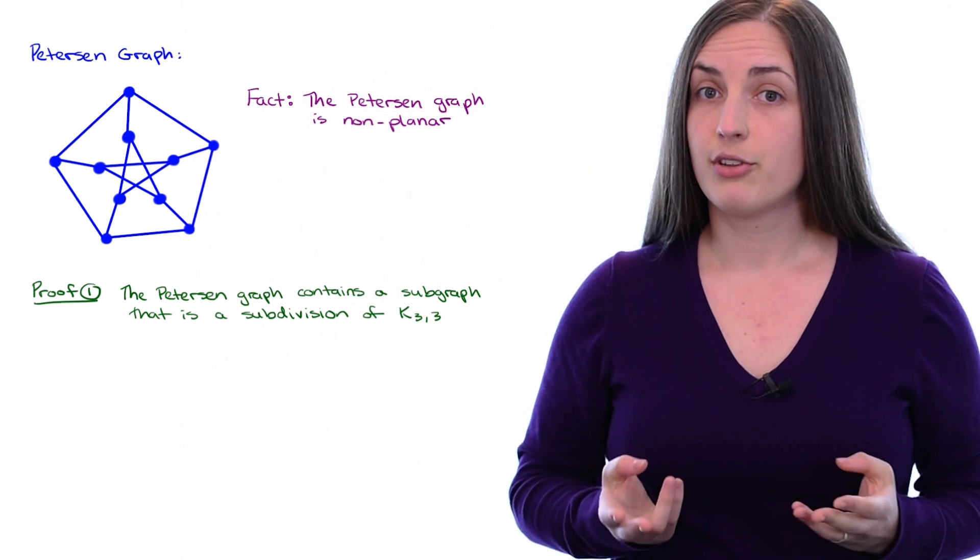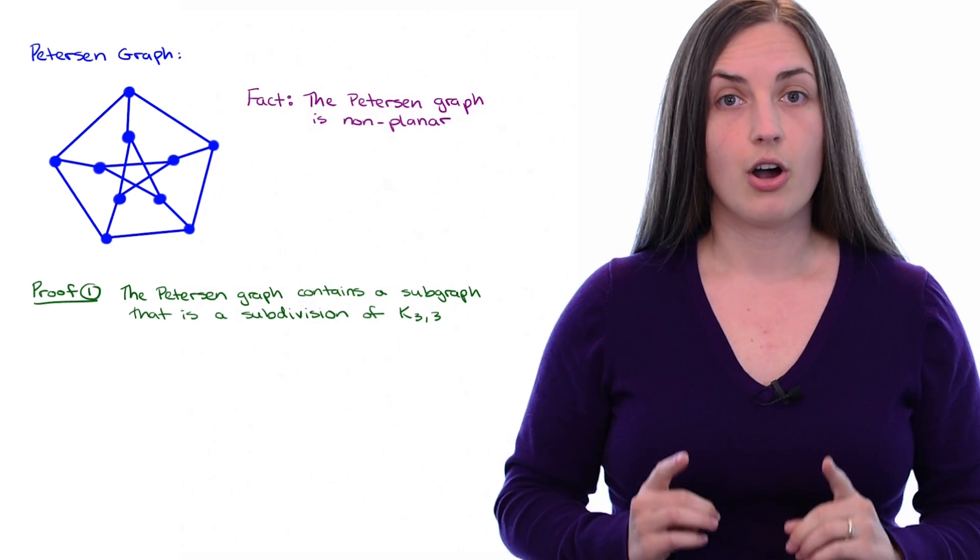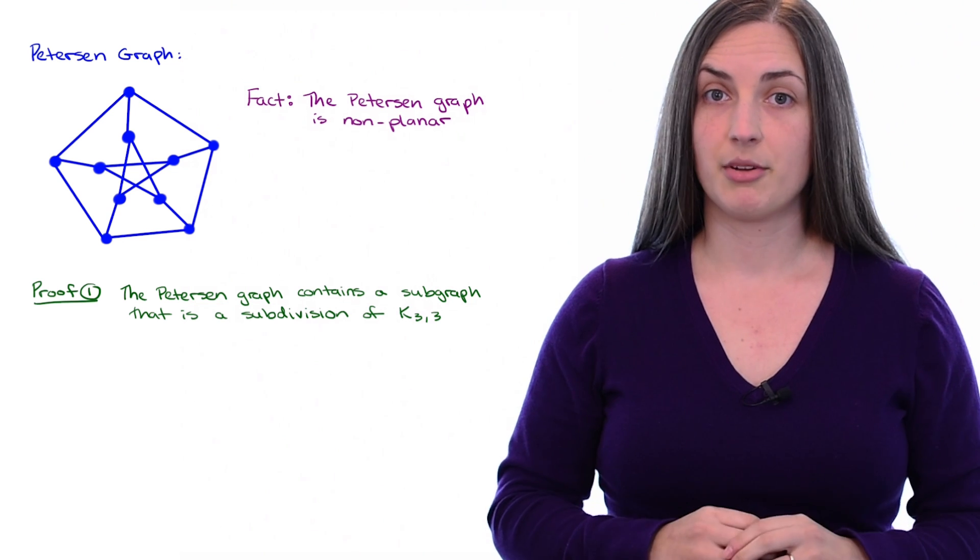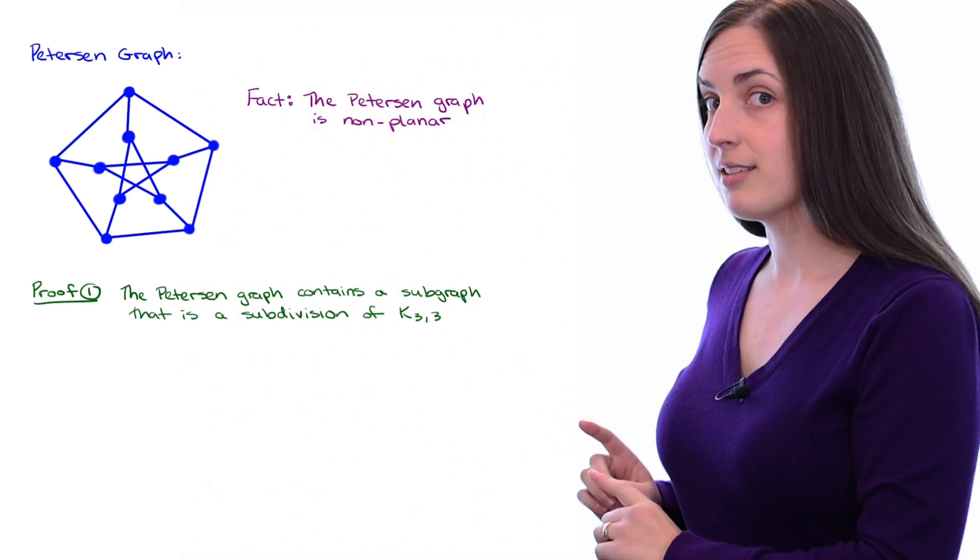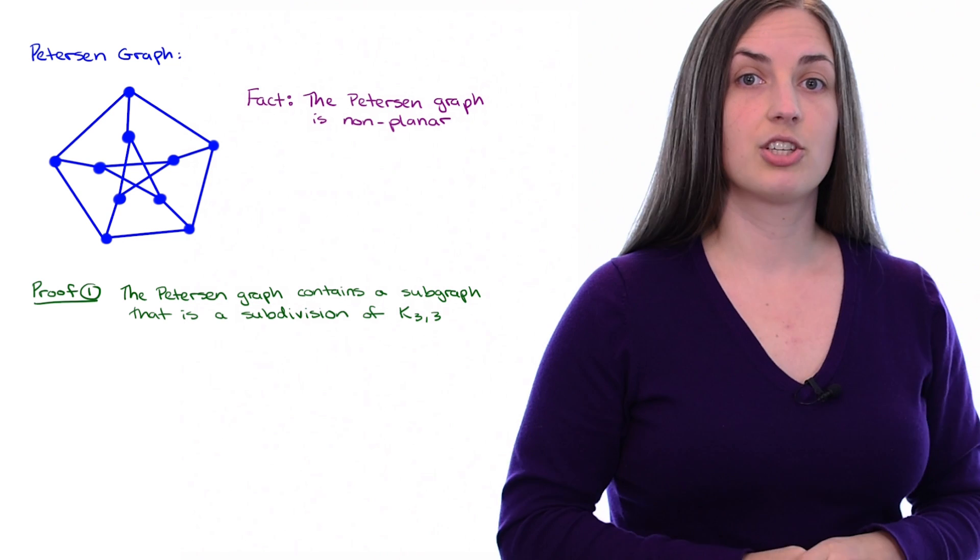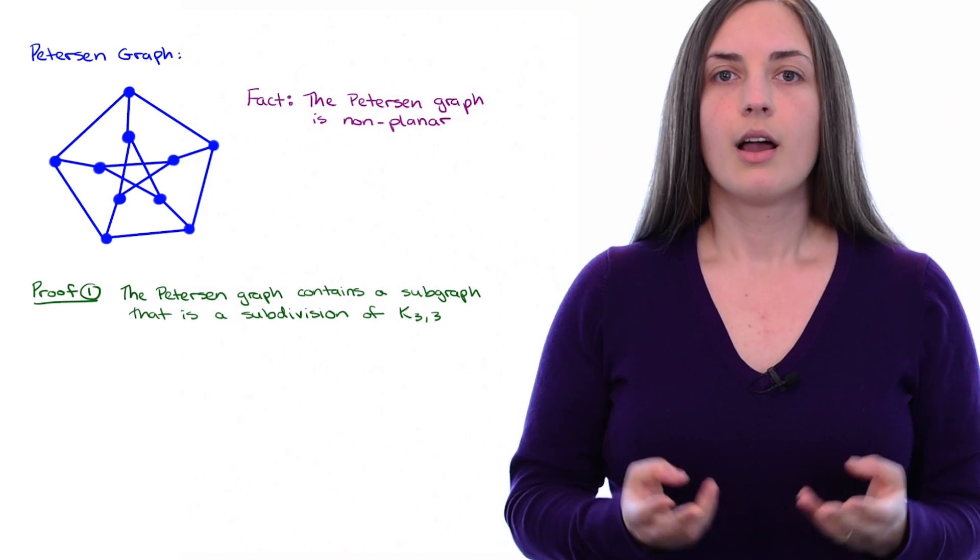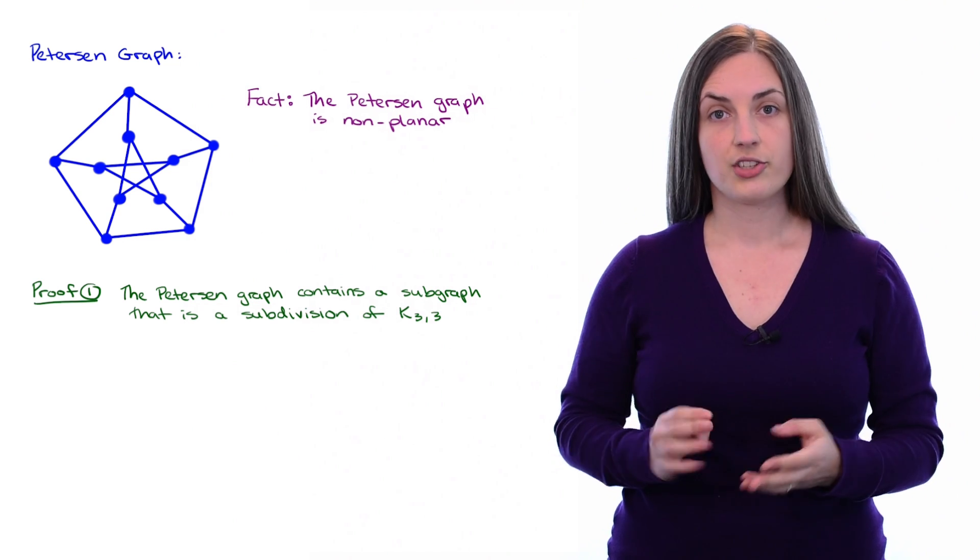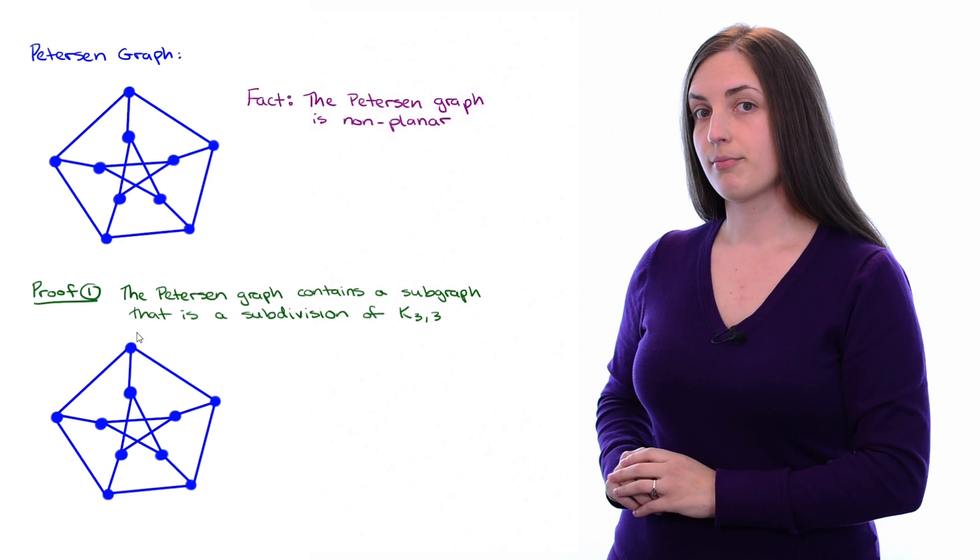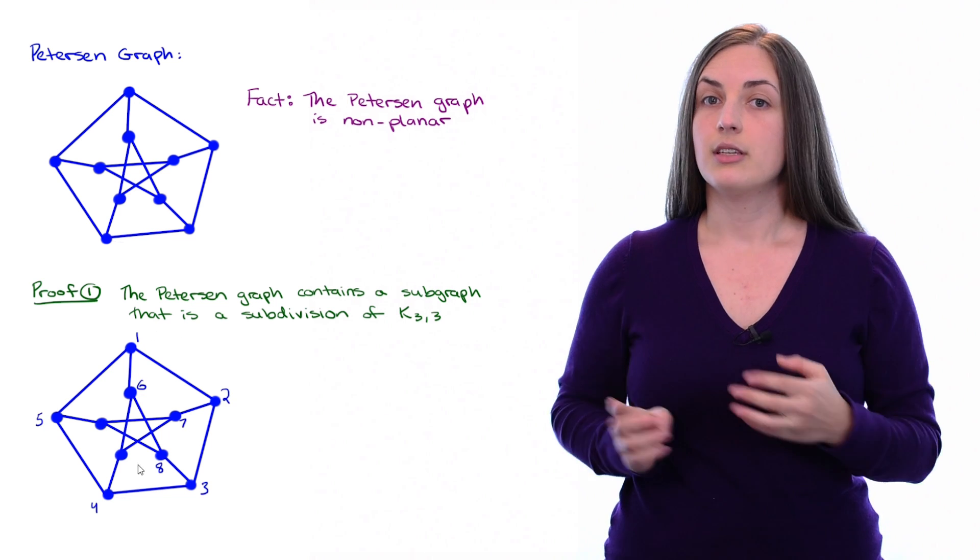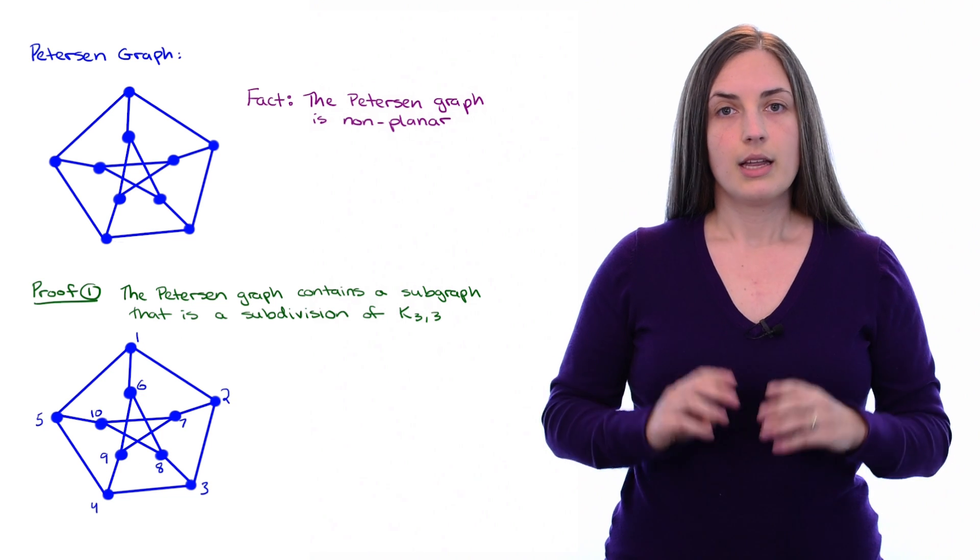So even though the Peterson graph does not have a subgraph which is a subdivision of K₅, we want to show that it does have such a subgraph which is a subdivision of K₃,₃. Let's start. First, I'll redraw the Peterson graph. And then I'll label the vertices one through ten.